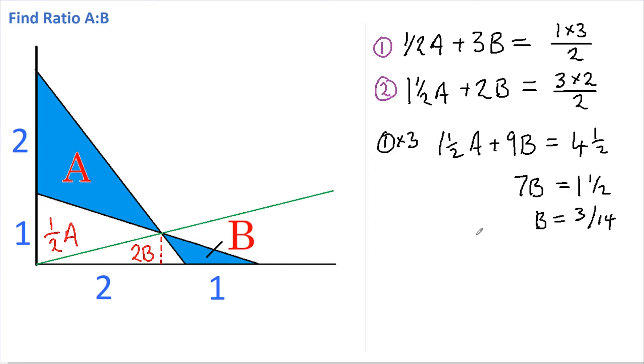And if we now substitute this into, say, equation 1, we get half A plus 3 lots of B, that's 9/14.